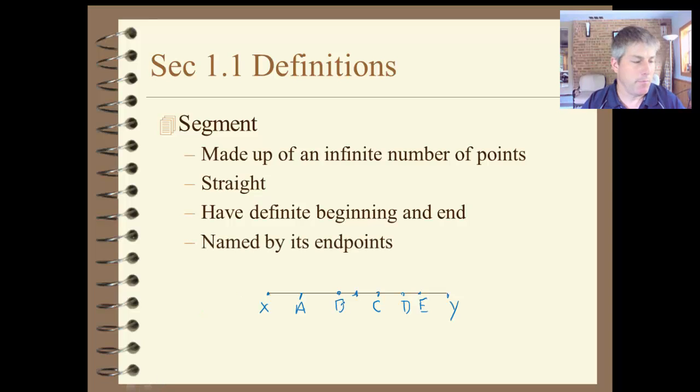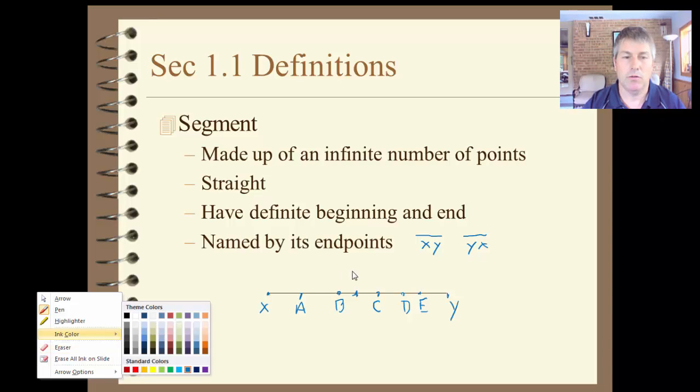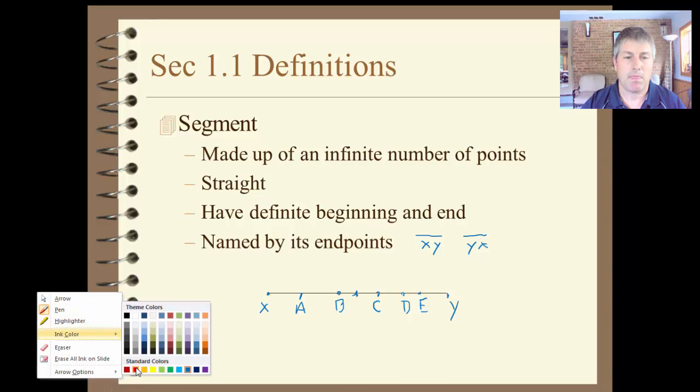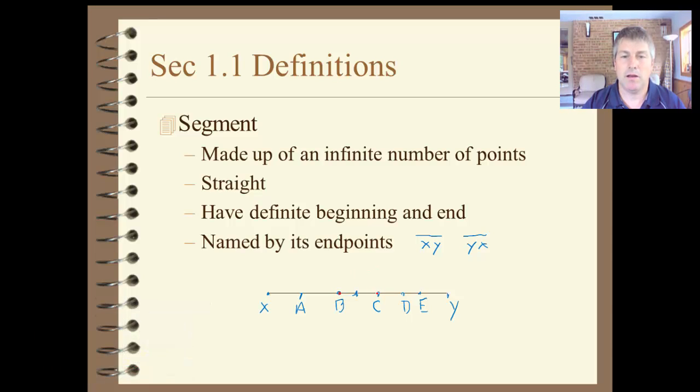And we name a segment by its endpoints. So this one we would call segment XY. Notice, I just put the segment above my two letters here. Now we could call it segment YX. That would be the same segment. Segment BC or segment DE, that would be different. That wouldn't be this whole segment. Segment BC would just be the area in here. So if I wanted to look at this segment here, that would be segment BC. Notice again, the segment, and that's just this little segment here. It's not the whole segment XY.